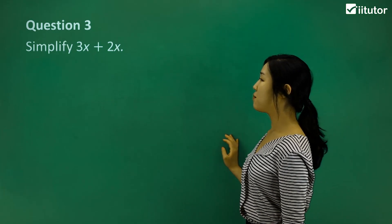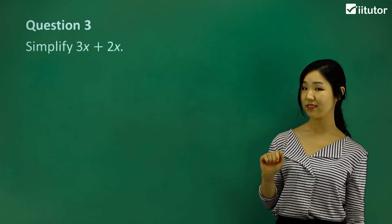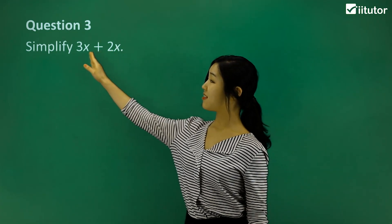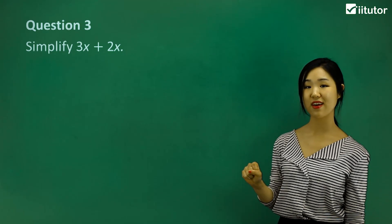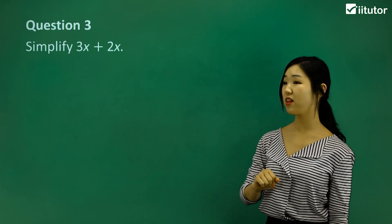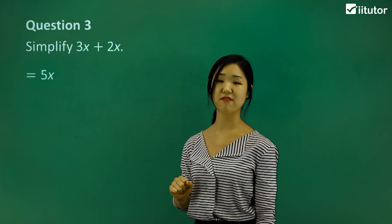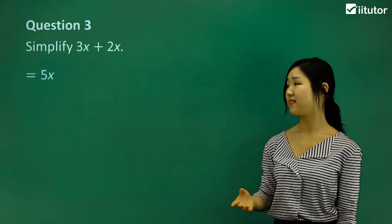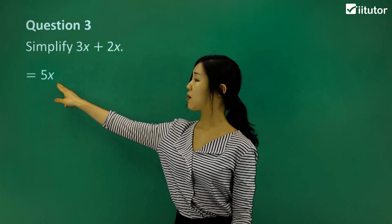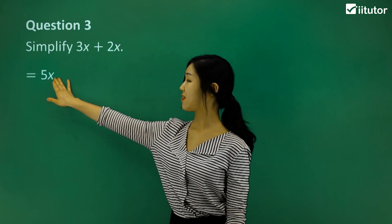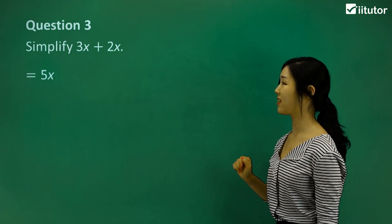Question three: simplify 3x plus 2x. First, are they like terms? Yes — they both end in the same variable x. So all we have to do is add them together: three lots of x plus two lots of x makes five lots of x, so we simplify to 5x. Because they end in the same variable, that variable stays, and we simply add the coefficients together to get 5.